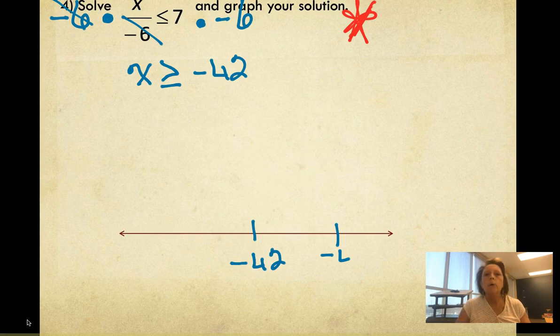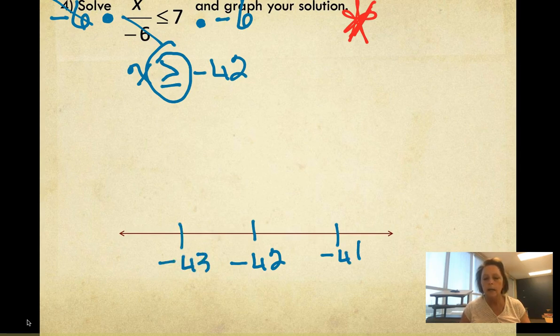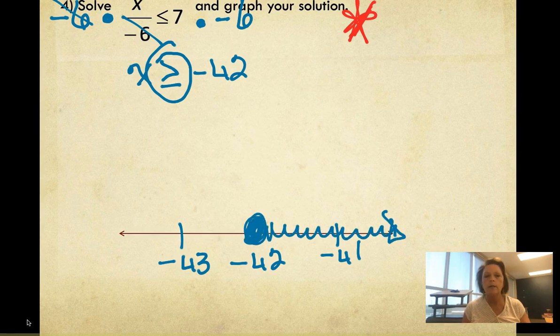Notice on this one that I multiplied both sides by a negative, so I had to flip that inequality symbol. It was less than or equal to, I had to flip it to greater than or equal to. And then I went ahead and graphed this. This will be a closed circle going to the right.